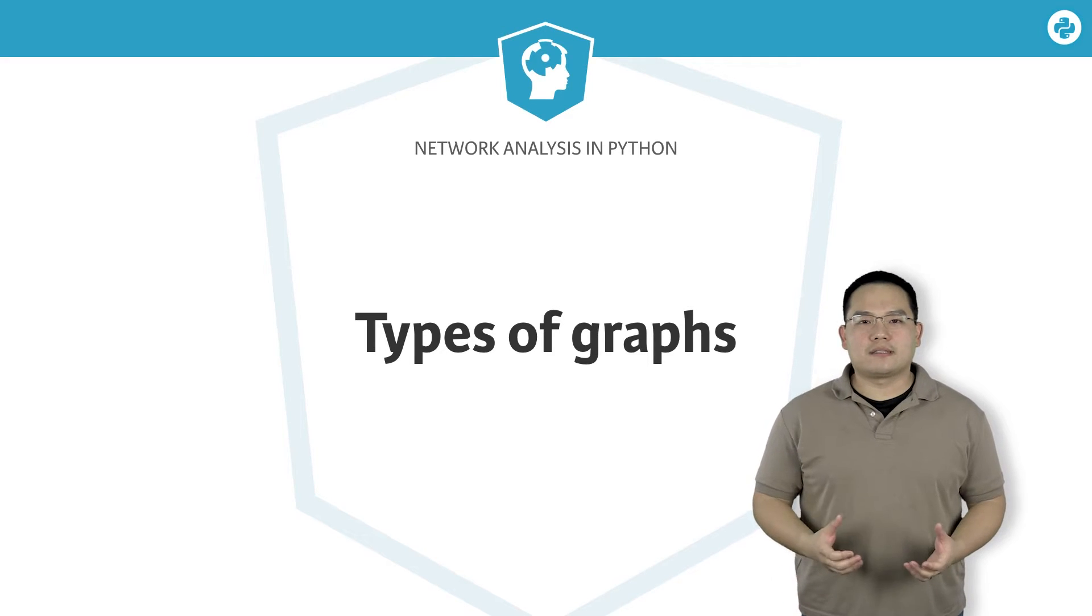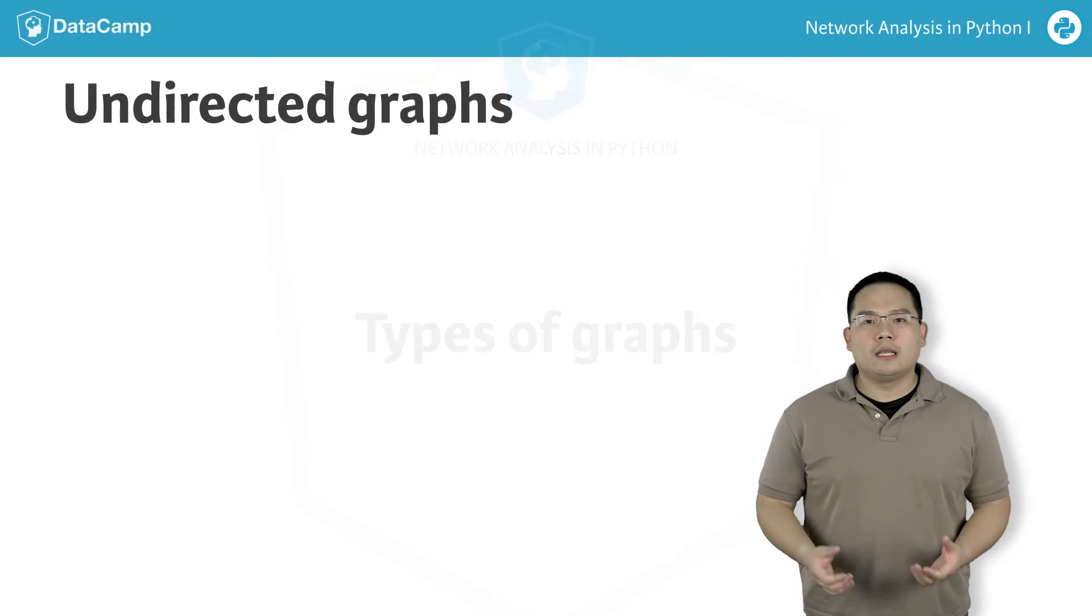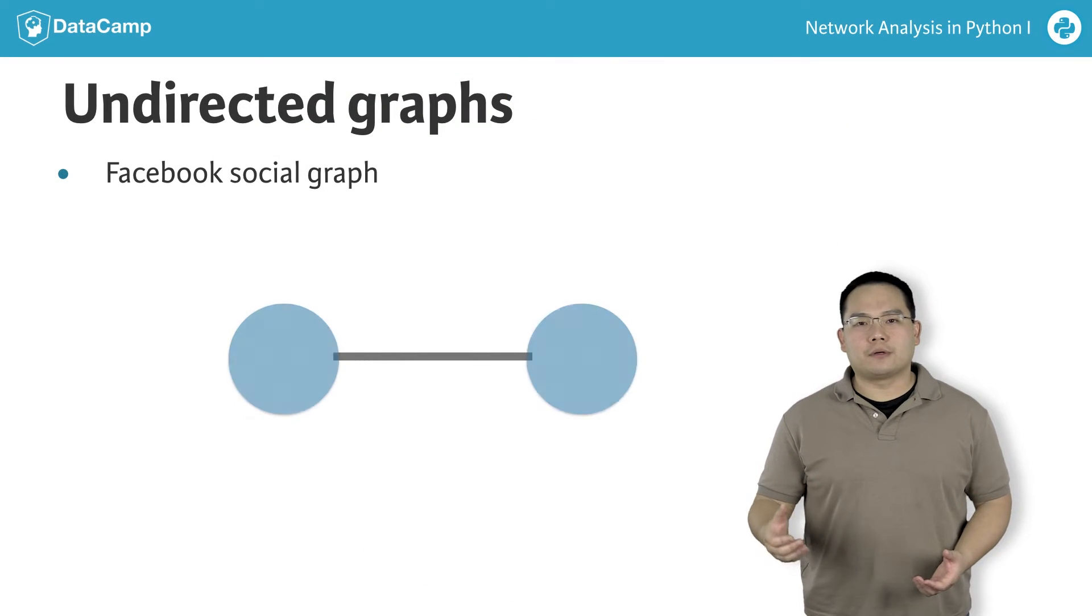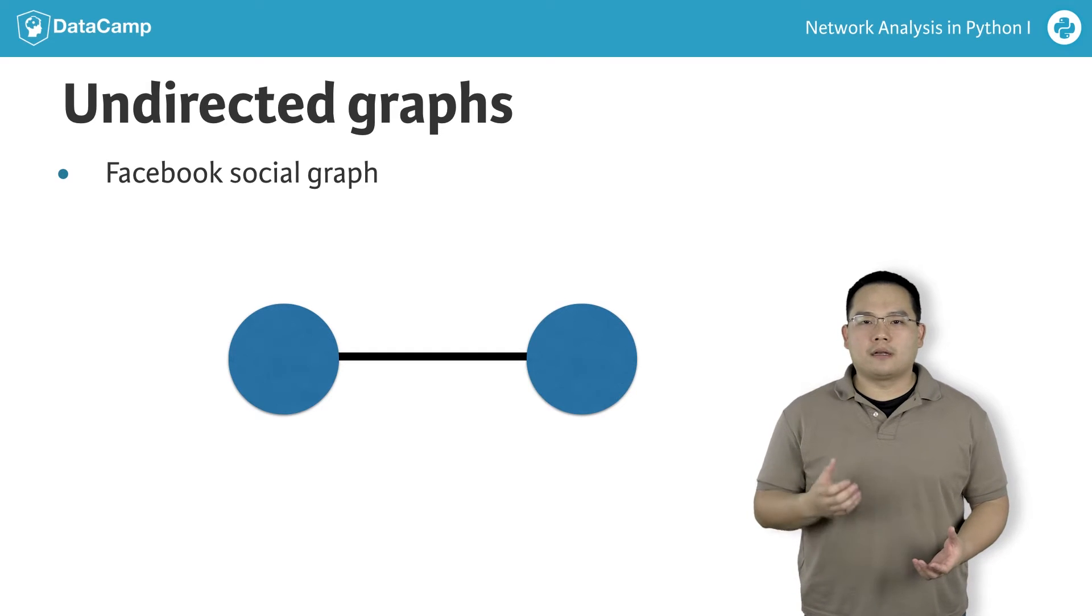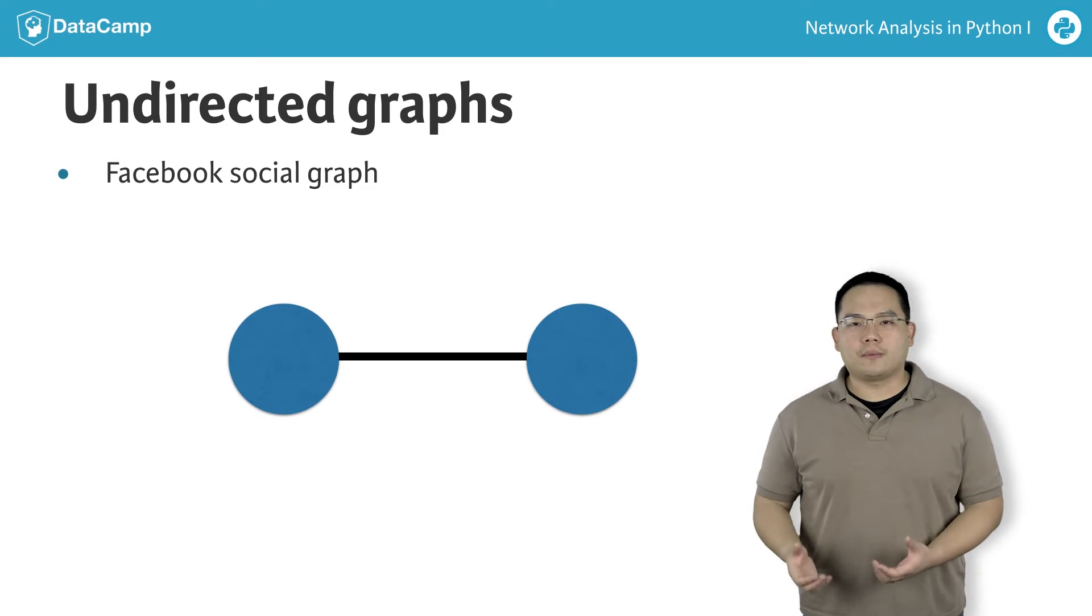NetworkX allows us to model different types of graphs. For example, there are social graphs like Facebook, which are undirected graphs. Undirected graphs are named as such because they are comprised of edges that don't have any inherent directionality associated with them.